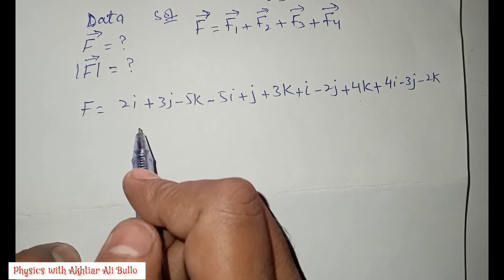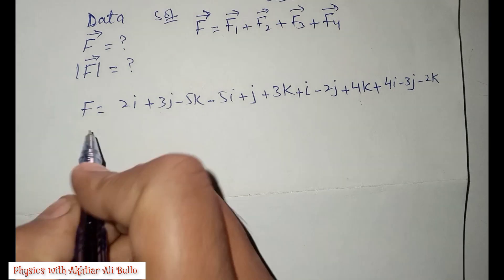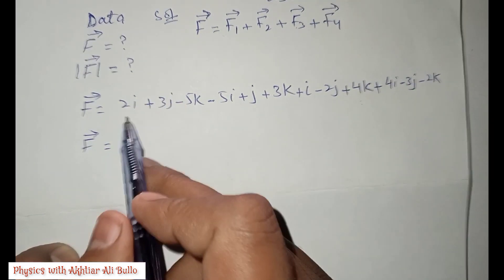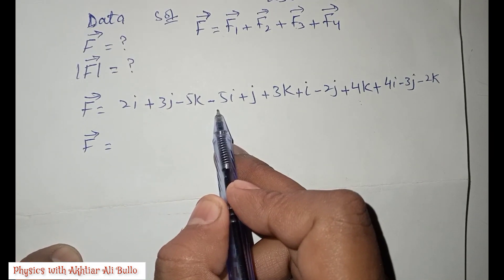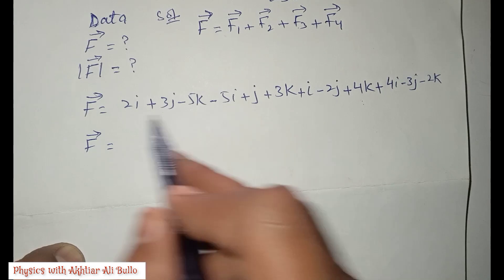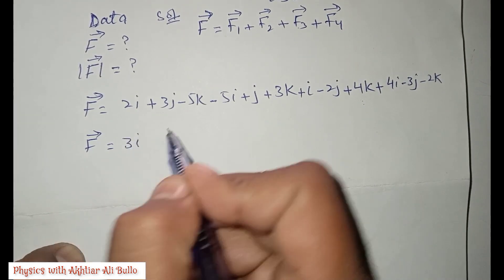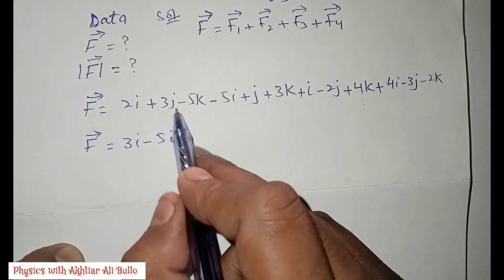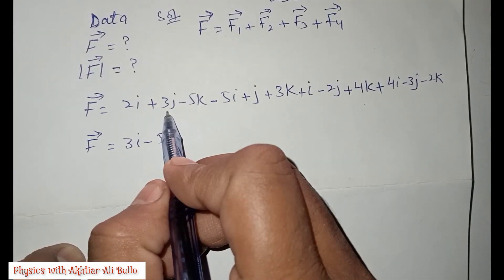Now we will add or subtract the values of i, j, and k. For the i components: +2i, −5i, +i, and +4i. Adding these: 2i + i + 4i = 7i, minus 5i gives plus 2i... working through: the i result is +3i − 5i.